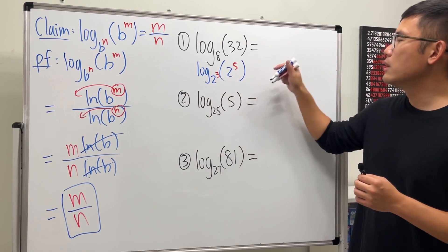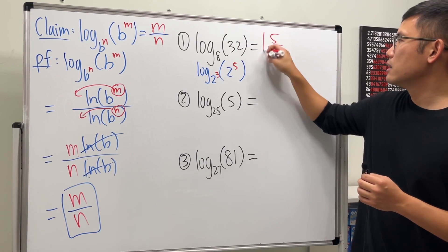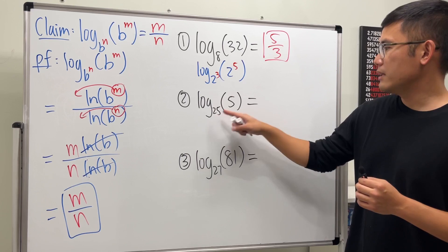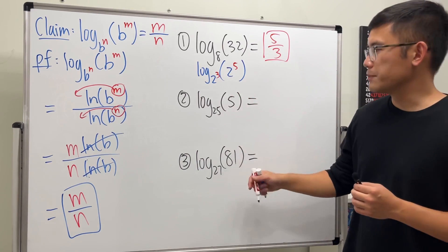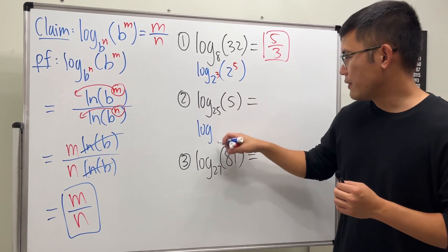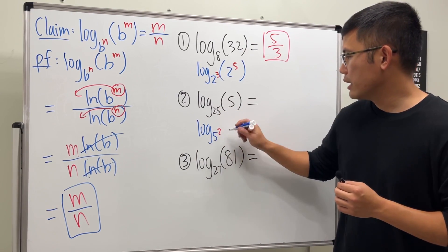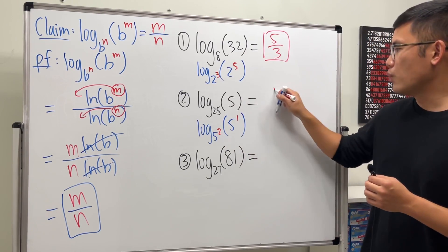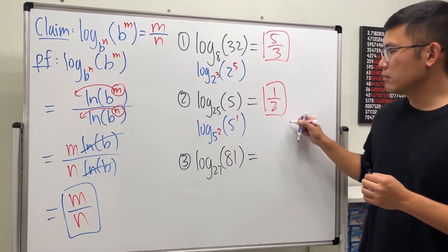Next one. Here we have 25 and this is 5. You know 5 is like 5 to the first power. So if you look at this as log base 5^2 of 5^1, the answer is just 1 over 2. Done.